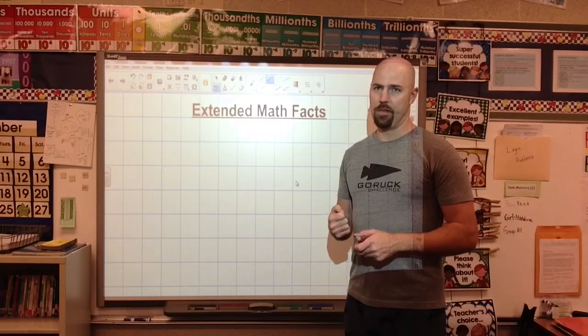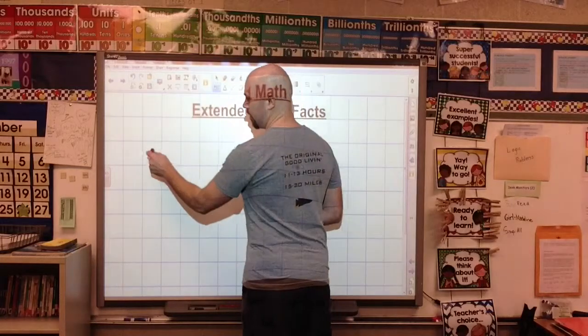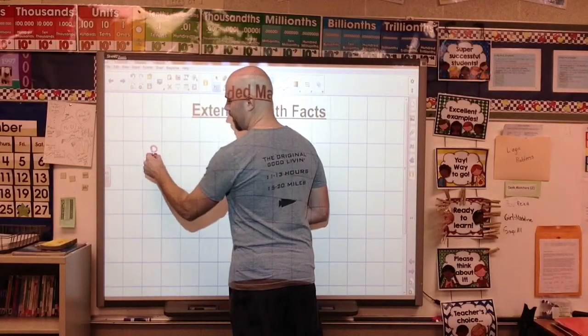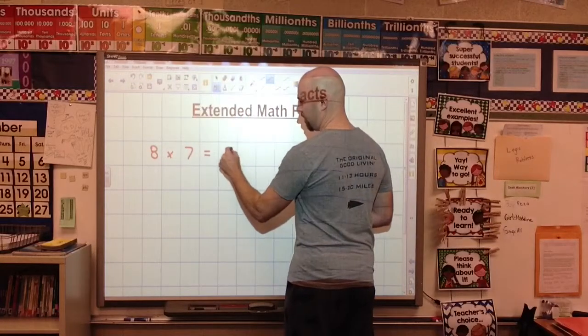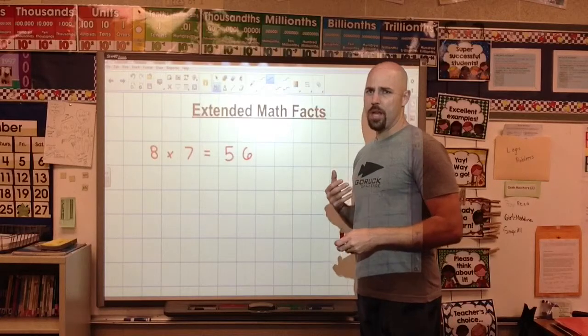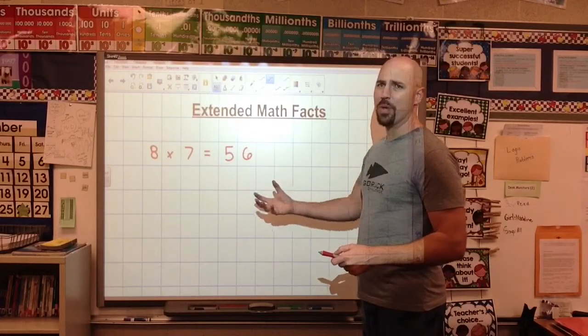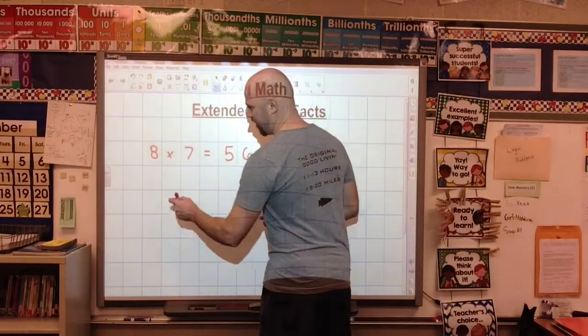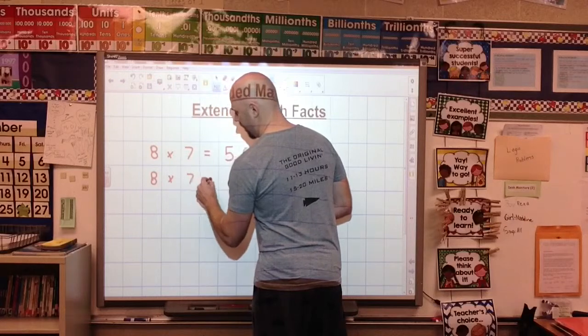Once we have those math facts memorized and they're automatic, we can start working with extended math facts. Let's say we do 8 times 7. Obviously, 8 times 7 is 56. An extended math fact is when we take this math fact and extend one of the numbers, which extends our answer. So let's say we go 8 times 70.